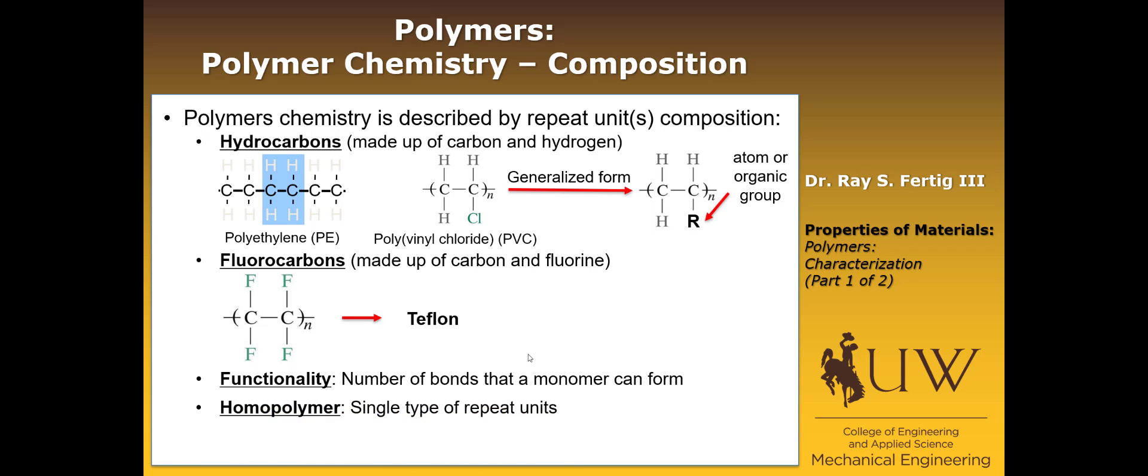If the polymer that we form is formed by a single type of repeat unit, which is the case for all the ones we've looked at here, that's called a homopolymer. If we use more than one repeat unit, it's called a copolymer. So those are some basic definitions - a brief overview of polymer chemistry with respect to composition.